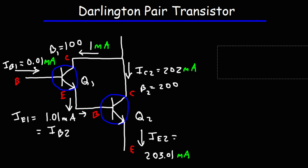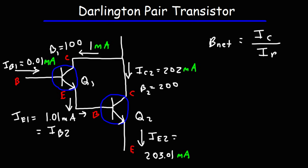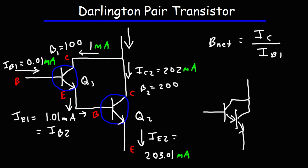So now let's calculate the overall beta for this entire transistor pair. We're going to take the total collector current and divide it by the initial base current, IB1. Let me draw a picture of the two transistors represented by one symbol — one way to show the Darlington pair is by drawing a picture like this and enclosing it in one circle.